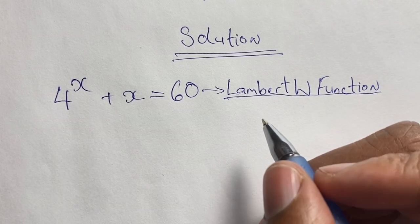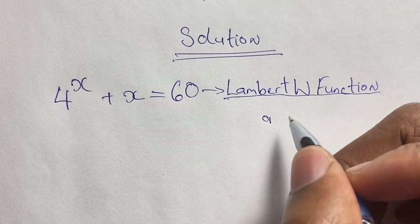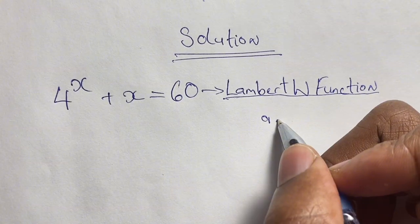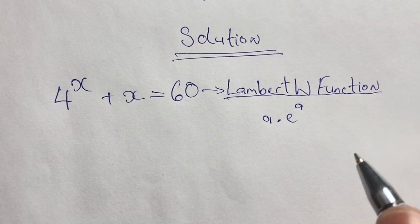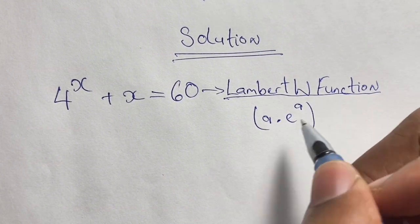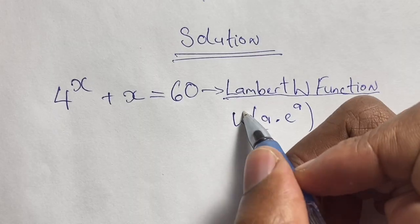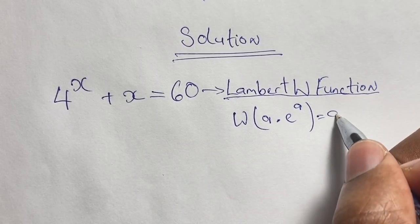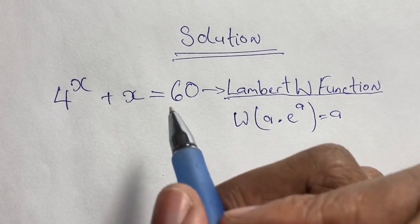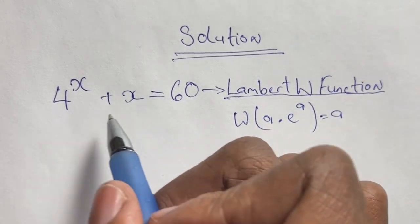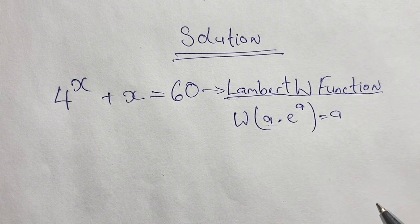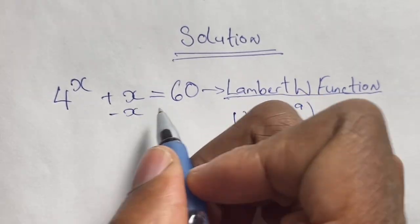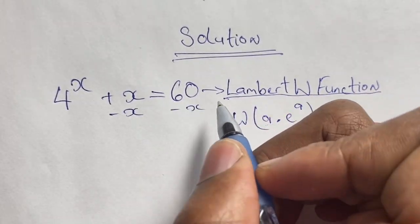How this function works is that if we have an expression such as a times e to the power of a, if we were to apply a W function and bracket this expression, the result is just a. So rewriting our equation in the form a times e to the power of a, when we apply our W function to that expression our result is just the value of a.